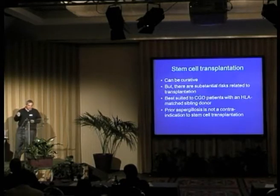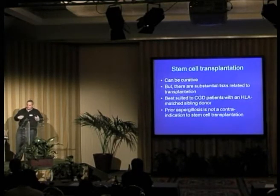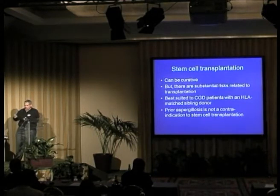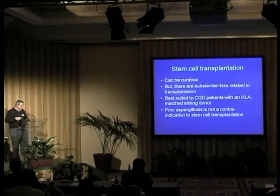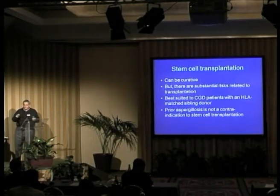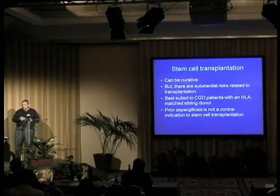Stem cell transplantation: CGD is a disorder of stem cells, so bone marrow transplantation will be curative if it works. You take a donor without CGD, the CGD patient undergoes a regimen to purge their marrow, and the donor cells are administered intravenously, and then the donor-derived immune system takes over. It's curative if it works, but transplantation is a therapy fraught with complications — there can be substantial transplant-related mortality, the transplant itself is immunosuppressive, and there can be substantial complications.